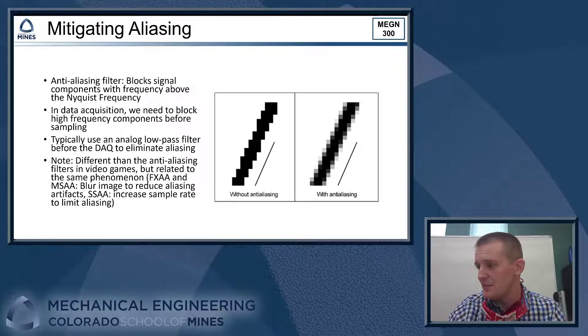So typically, with our DACs, where we're sampling voltages, what we'll do is we'll implement an analog low pass filter right before the DAC will block out all the high frequency components and make sure that those don't get sampled by the DAC so that there's no aliases in our signal.